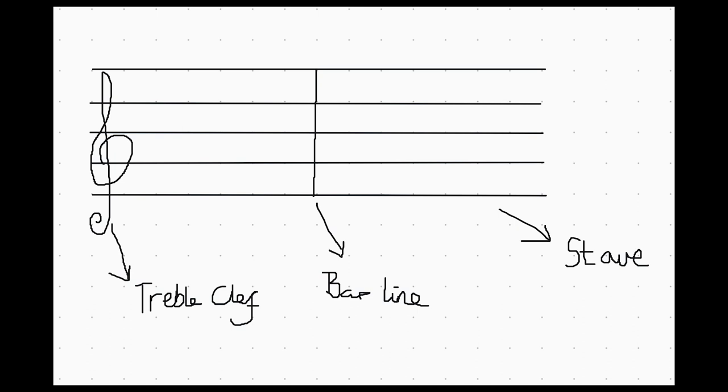To the left hand side of the stave I've drawn a very pretty symbol called a treble clef and this when we're singing for most of us is where our voices sit in terms of pitch. And then I've drawn a bar line down the middle which indicates how we split each bar up individually.